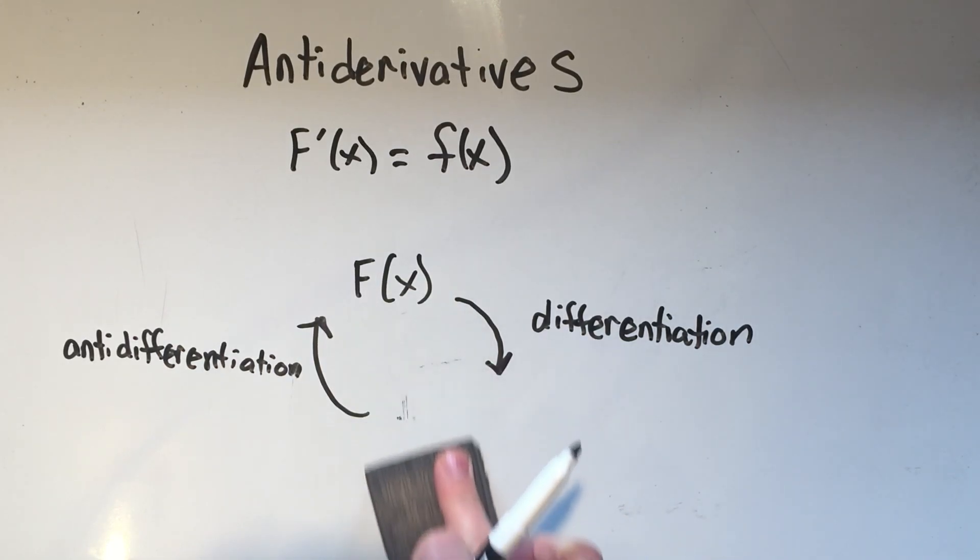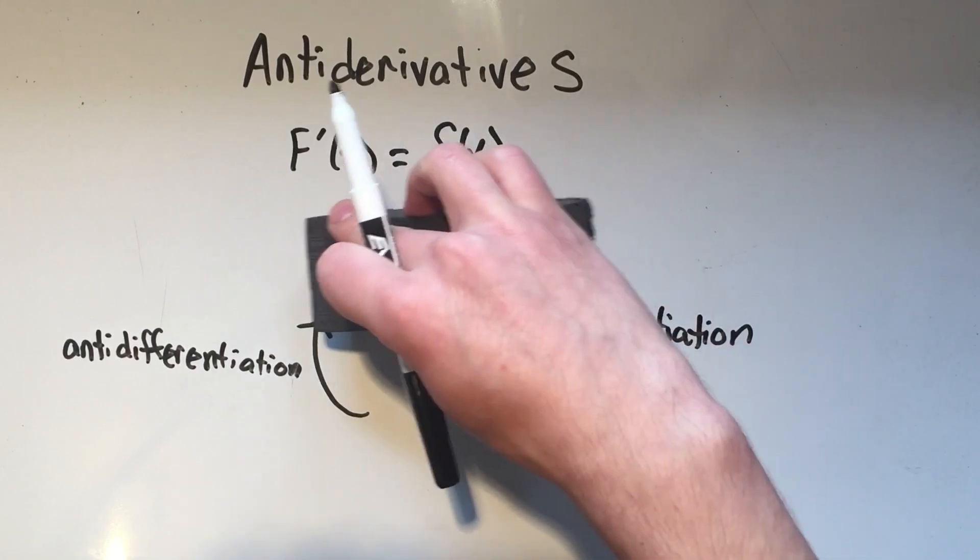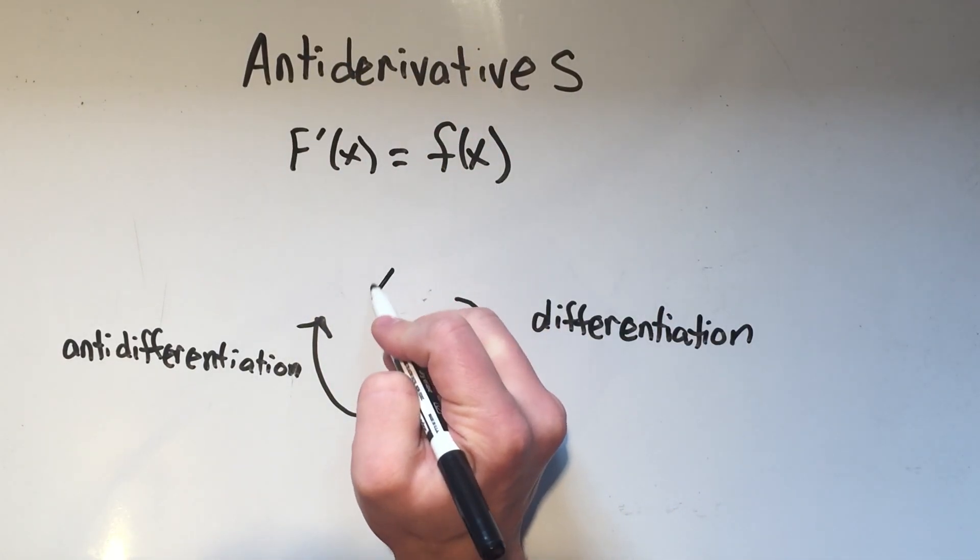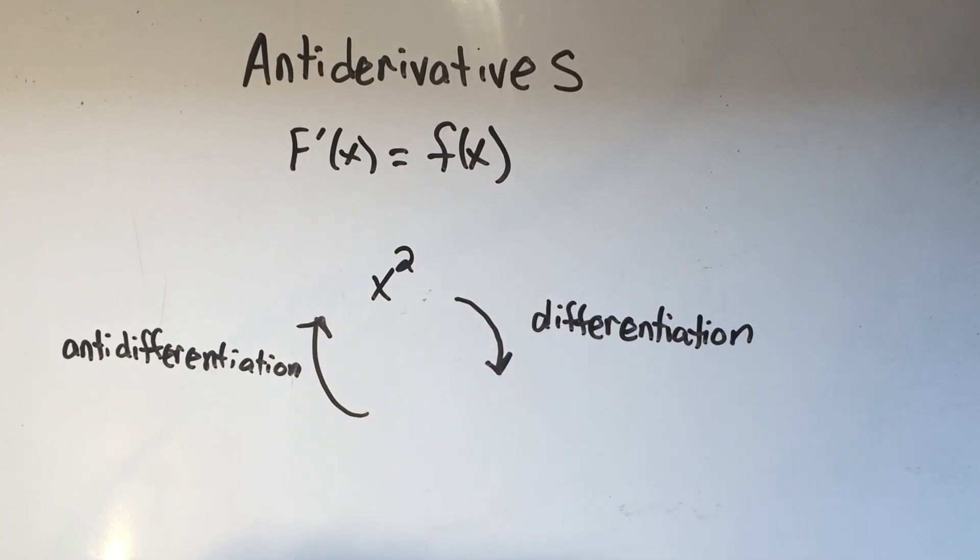Let's take a look at an actual example of this. Let's look at x squared. The derivative of x squared is 2x. That means the anti-derivative of 2x is x squared. I think that makes sense.